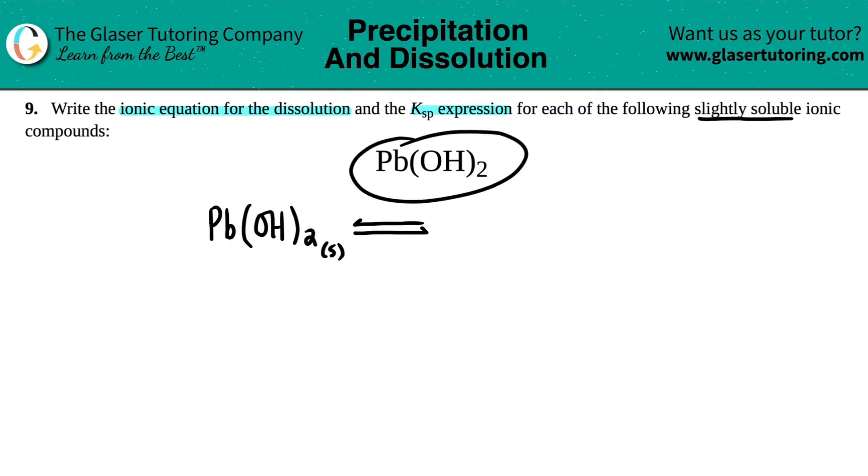So we have to find out where the split is between Pb(OH)₂. Well, I noticed that I have OH, and OH is hydroxide. It's a polyatomic. So the break has to be between the lead, the Pb, and the OH. So there are my two ions starting off. We have Pb and then OH.